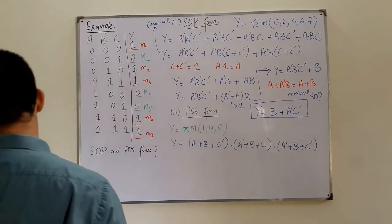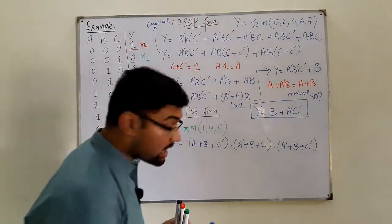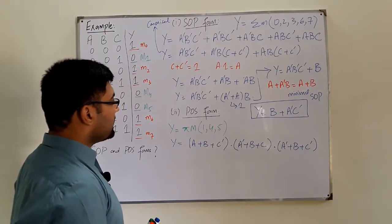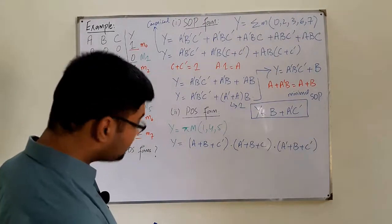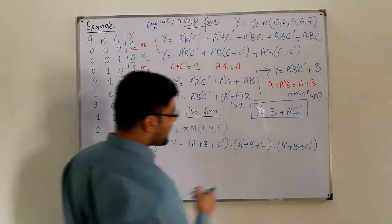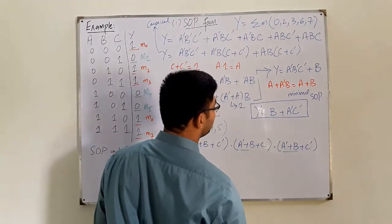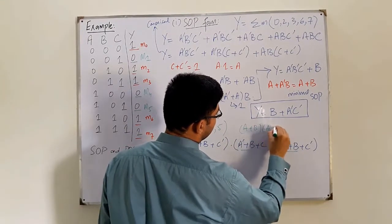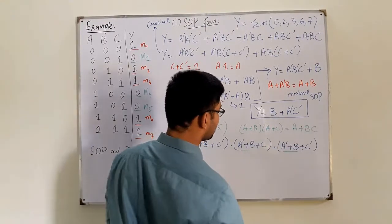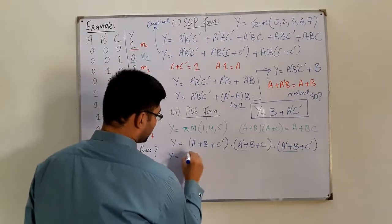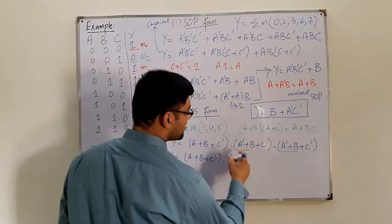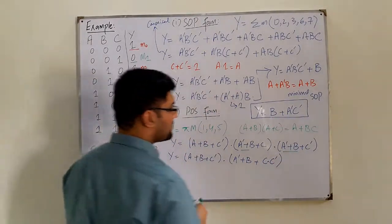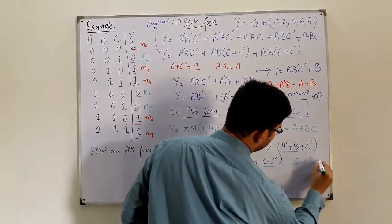What we've written is the canonical POS form. Now how do we simplify it? We have A' + B common in two terms. Using the distributive law — a + b·c = (a + b)(a + c) — this gives us (A + B + C')(A' + B + C·C'). Now C·C' = 0, so that term simplifies.